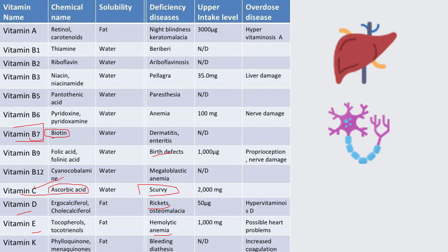These are the important things to remember. If you can remember everything, that's excellent and very appreciable. But if you want to focus on the most important chemical names and deficiency diseases repeatedly asked in previous papers, prioritize vitamin A, vitamin B1, vitamin B7, and vitamin C.